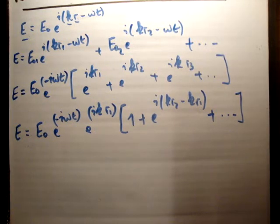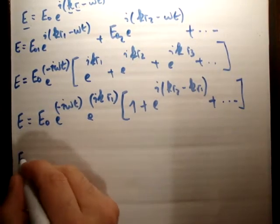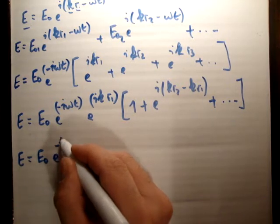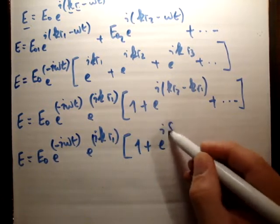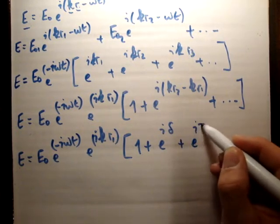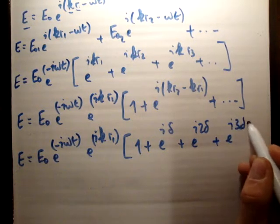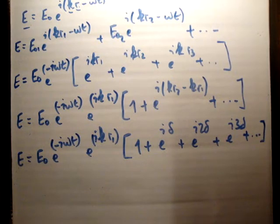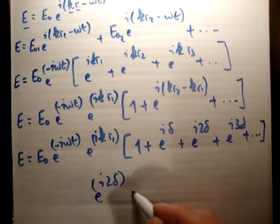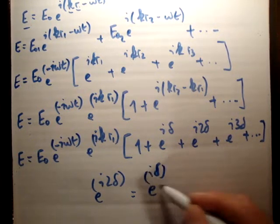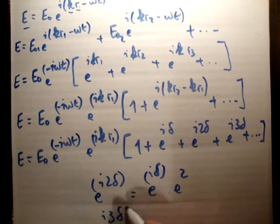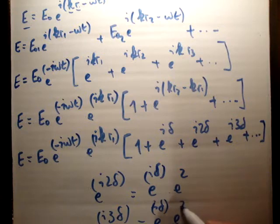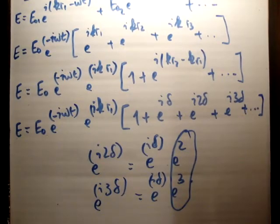What we need to do now is make another substitution. We're going to say the electric field is equal to the initial amplitude e0, times e to the negative iωt, times e to the ikr1, times the quantity 1 plus e to the iδ plus e to the 2iδ plus e to the 3iδ, and so on — an increasing exponential set of powers.